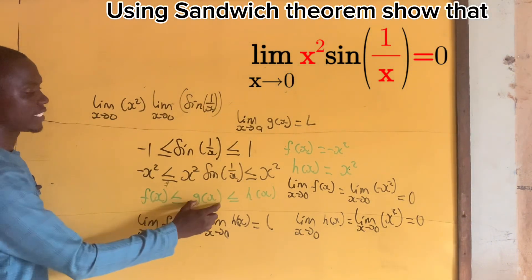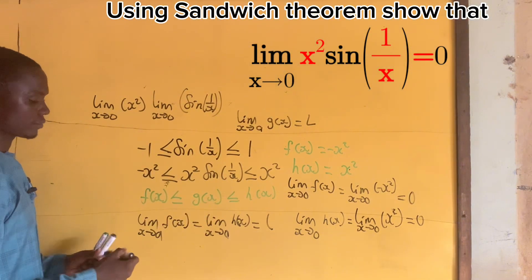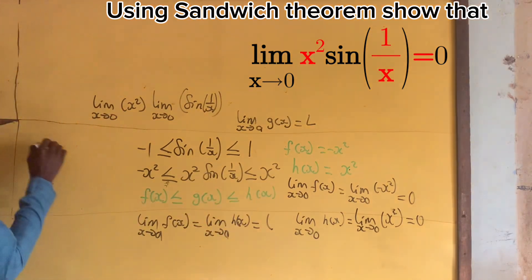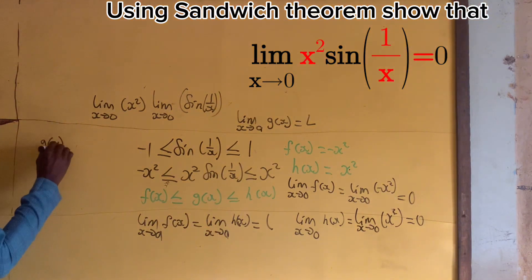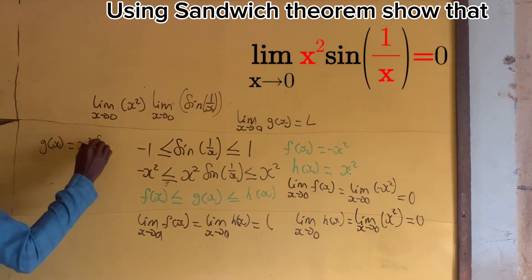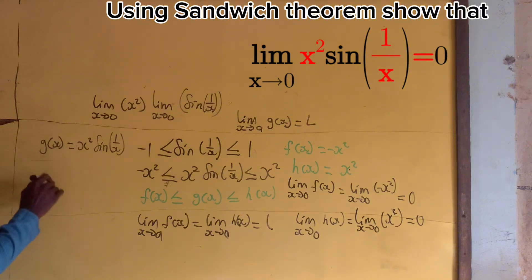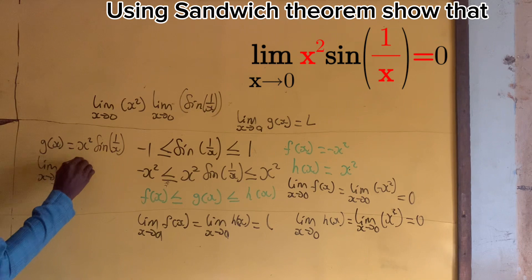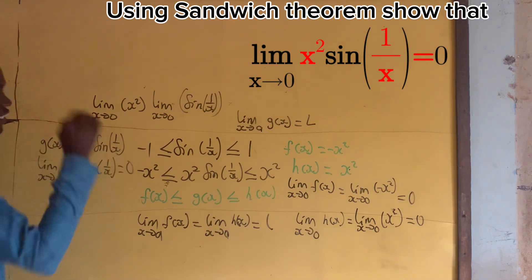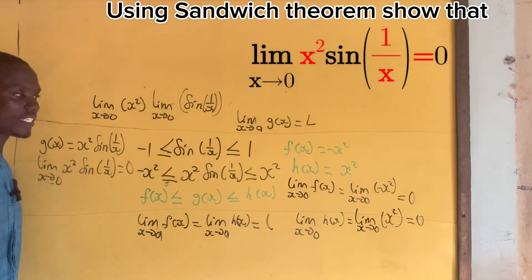So now, what is our g(x)? Our g(x) is equal to x²sin(1/x). So it means that the limit as x approaches 0 of x²sin(1/x) is equal to 0 from sandwich theorem.